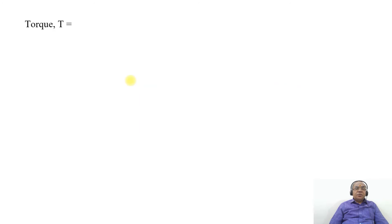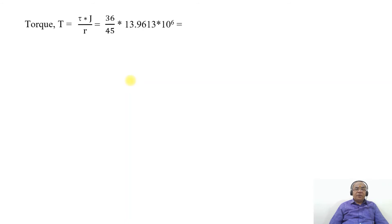The torque will be equal to tau into J by R. So tau is 36, R is 45, and J is 13.9613 into 10 to the power of 6 mm to the power of four. On simplification, we get the torque as 111133 Newton mm.